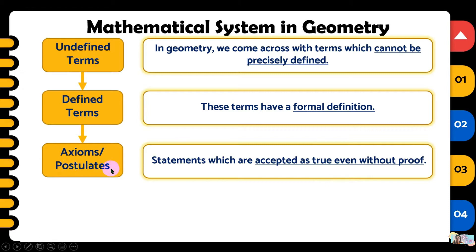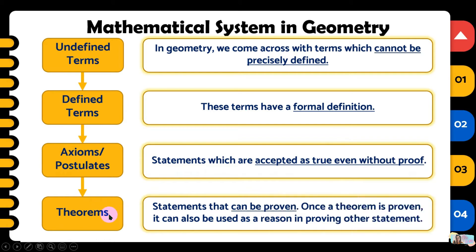Next is the axioms or postulates. These are statements which are accepted as true even without proof. We use these sentences or statements to prove something and we don't need to prove them anymore. They are accepted already. Then, the last one is the theorems. These statements can be proven. Once a theorem is proven, it can also be used as a reason in proving other statements.